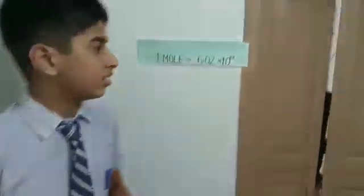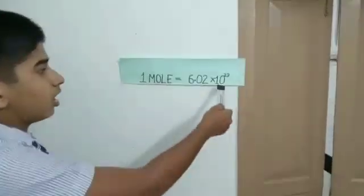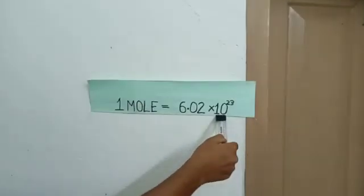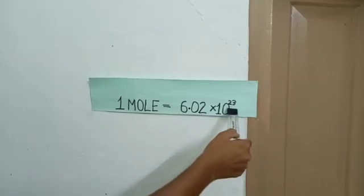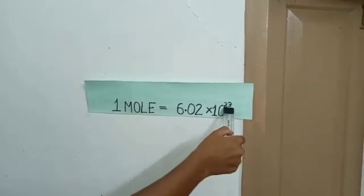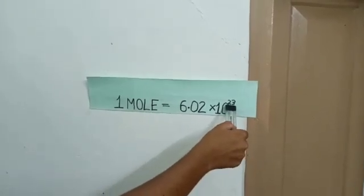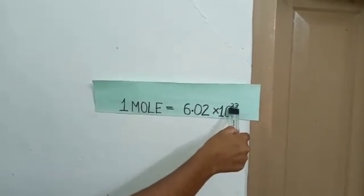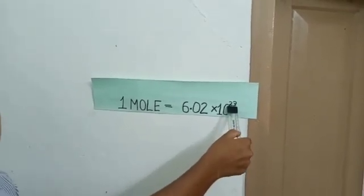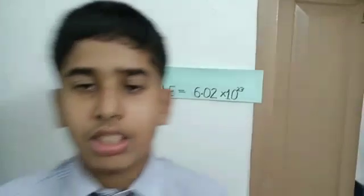Look at this: the 10th month is October — 10^23. And 23 is the date, October 23. Thus, October 23, from 6:02 AM to 6:02 PM, is observed as Mole Day.